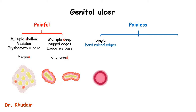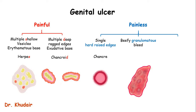Now let's shift gears and talk about the painless ulcers. If it was a single ulcer with hard raised edges, this is a chancre. Next, if it was a beefy granulomatous ulcer that bleeds easily, this is granuloma inguinale. So granulomatous goes with granuloma.